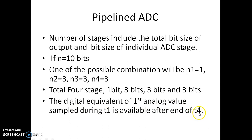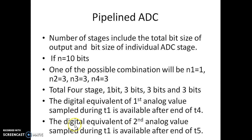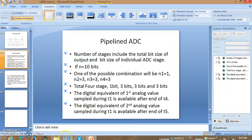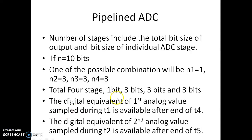The digital equivalent of the first analog value sampled during T1 will be available after the end of T4 — it takes 4 clock pulses to get the output of the first sampled value. The second analog value sampled at T2 will be available after T5. After every one clock cycle, a new result emerges: T4 gives the first sample, T5 gives the second sample, T6 gives the third sample, and so on. There is no wastage of time — every clock cycle produces a new output.